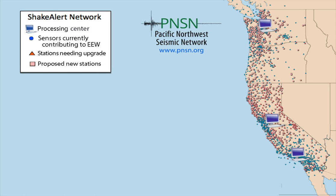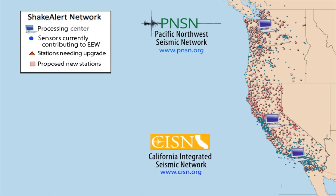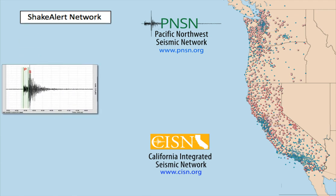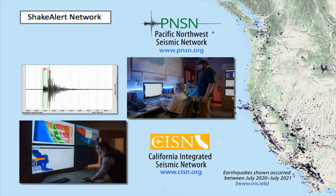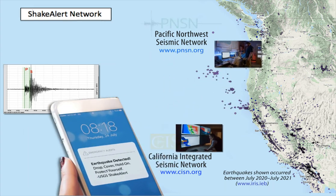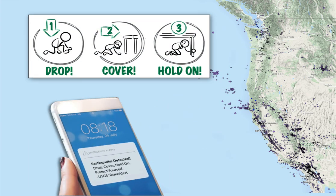As the Pacific Northwest Seismic Network and the California Integrated Seismic Network install more sensors, ShakeAlert will detect earthquakes faster and more accurately. Plus, ShakeAlert scientists are constantly working behind the scenes to improve the earthquake detection algorithms, making them better at rapidly determining when a small initial rupture has grown larger to become a megaquake. As soon as you receive an alert or feel shaking, take action to protect yourself.